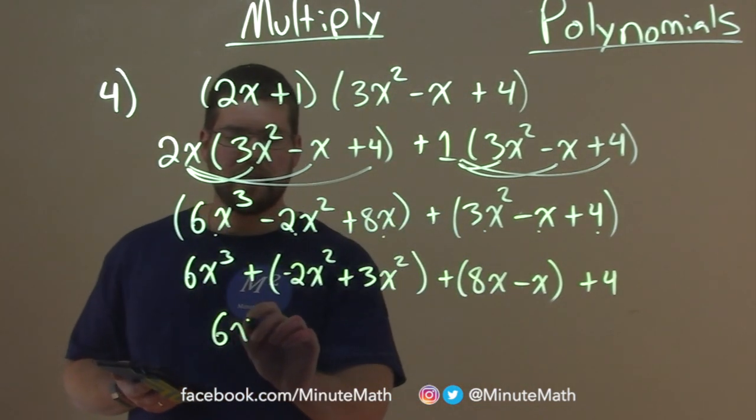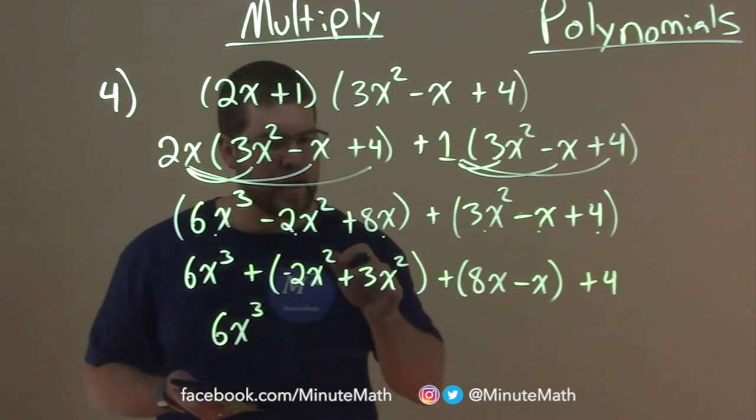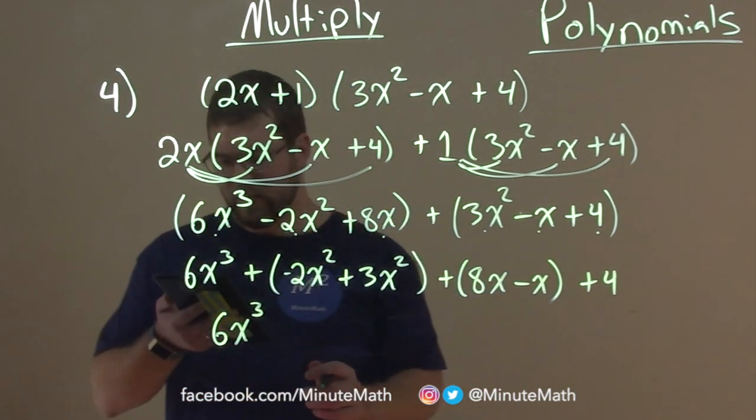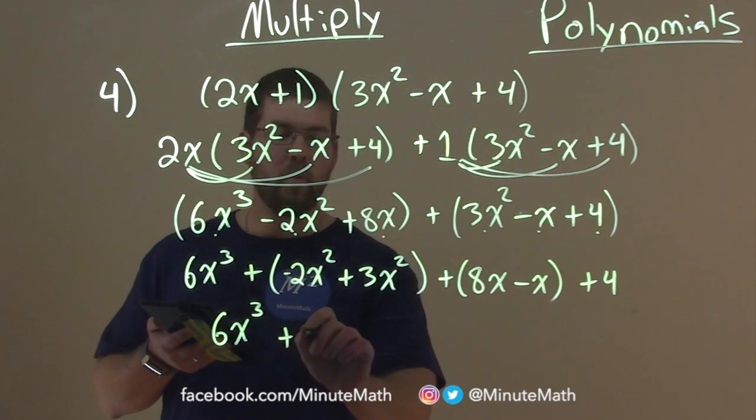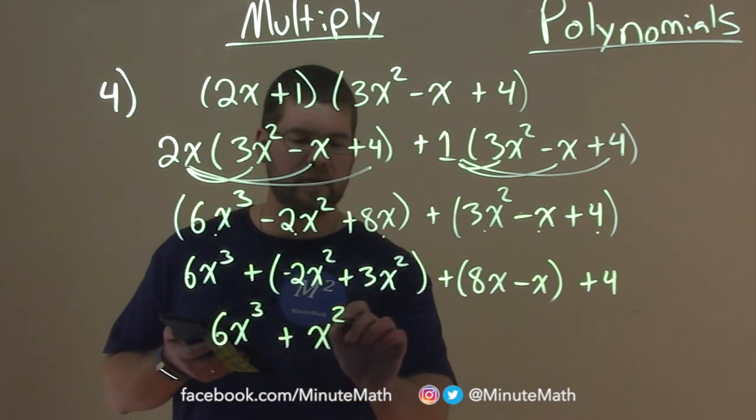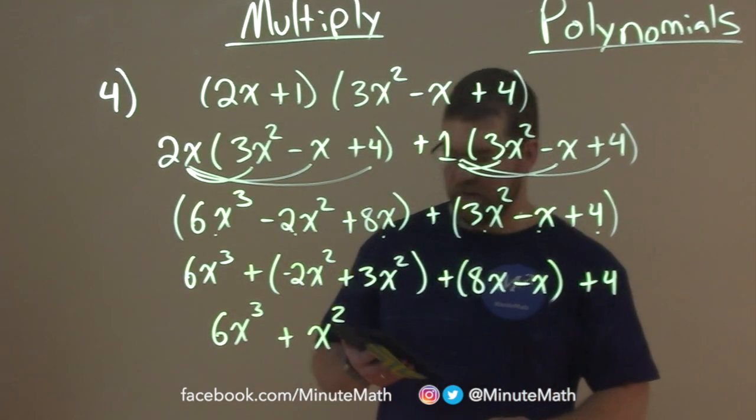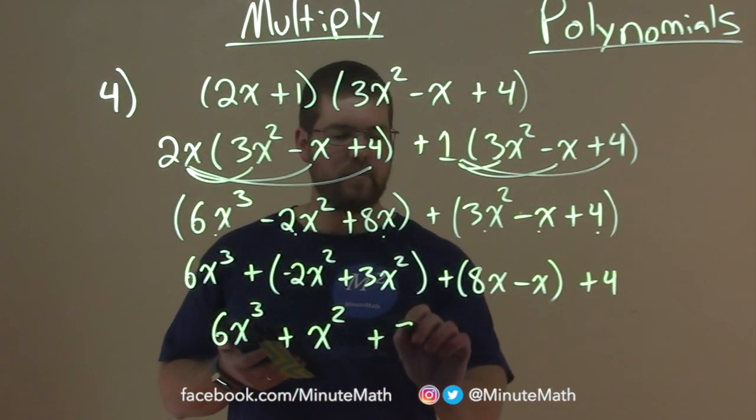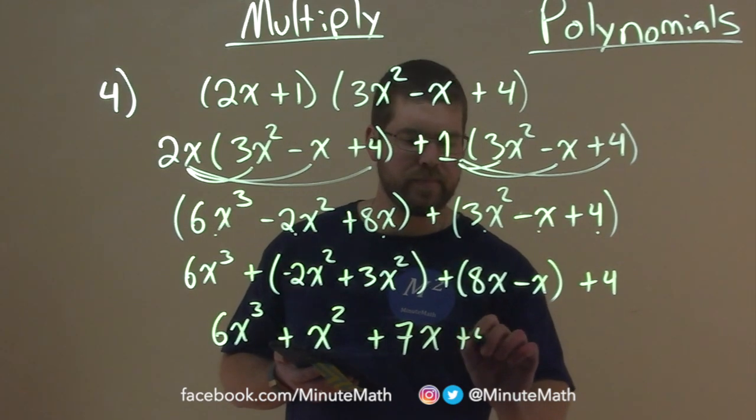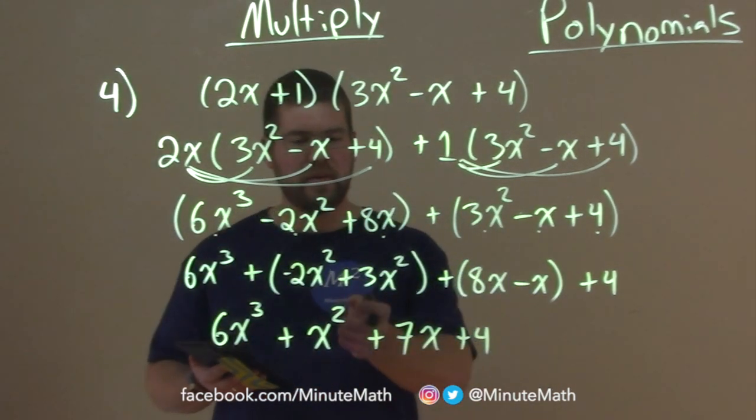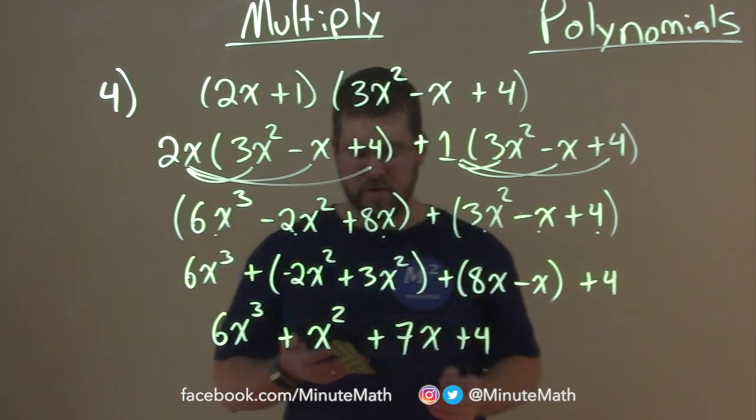6x to the third, again, is just by itself. But then the next one here, we have minus 2x squared plus 3x squared. That's just a positive 1x squared. So we just write x squared here. 8x minus x is just going to be 7x. So we have plus a 7x. And then bring down the plus 4. And now we're done. Our final answer is just 6x to the third plus x squared plus 7x plus 4.